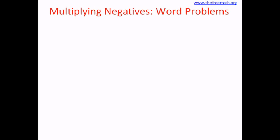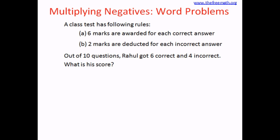Let's solve some word problems to multiply negative as well as positive numbers. The first problem: a class test has the following rules — 6 marks are awarded for each correct answer and 2 marks are deducted for each incorrect answer. Out of 10 questions, Rahul got 6 correct and 4 incorrect. What is his score?